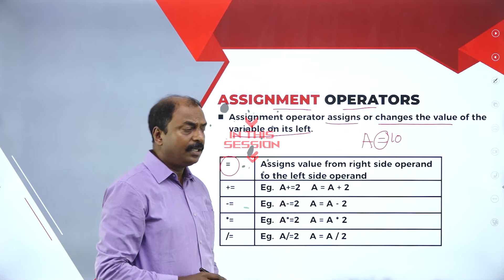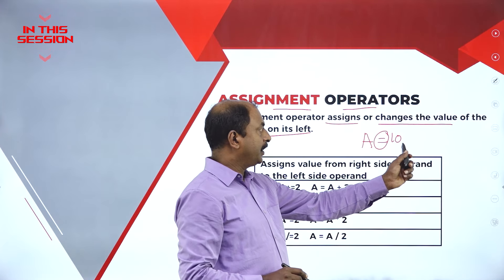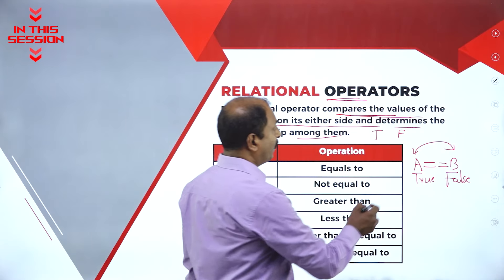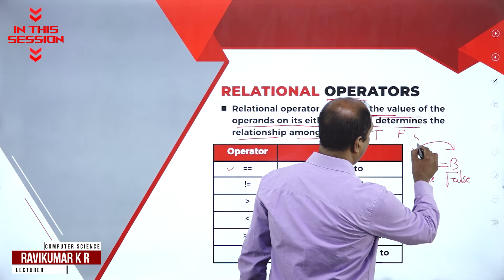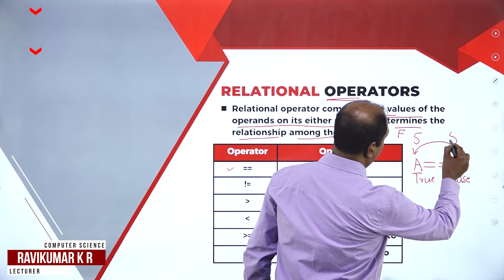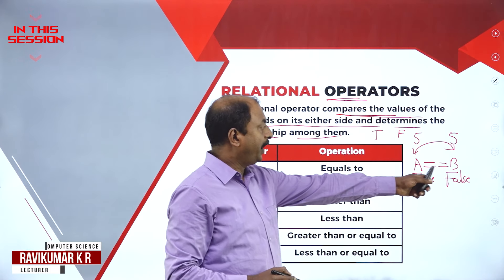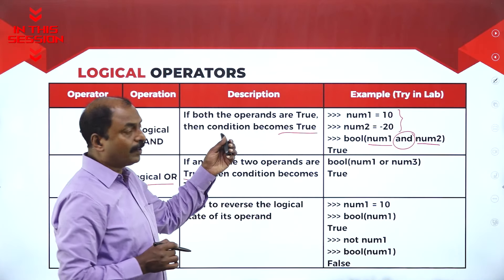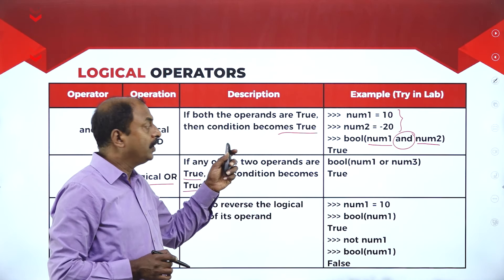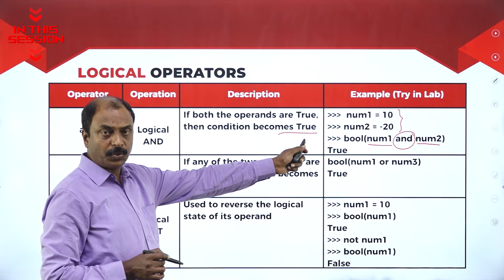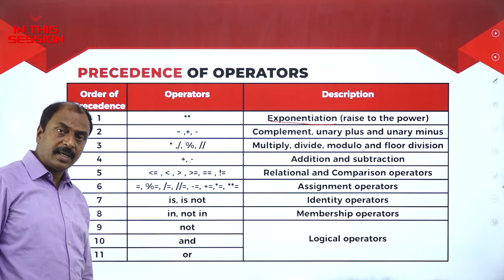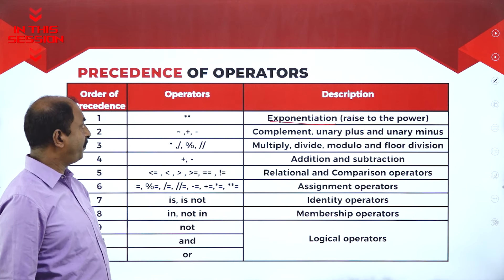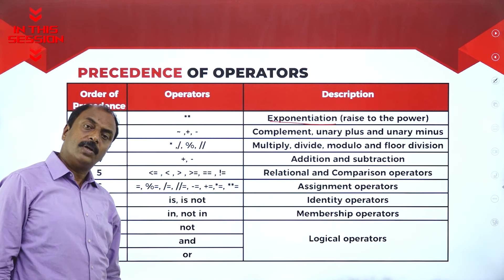Assignment operator assigns the value of the right hand side to the value of the left hand side operator. If the values of A is 5 and values of B is 5, so 5 equals 5, the result will be true. In AND operation, both the operators must be true to get the result as true. Any statement in Python language will be executed based on this order of preference or precedence of operators.